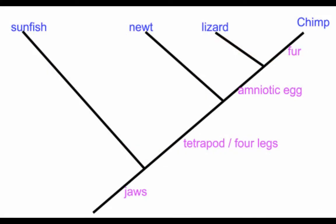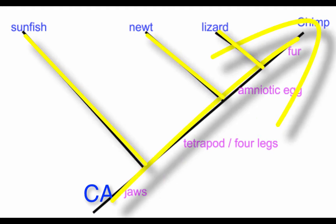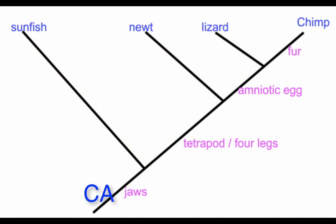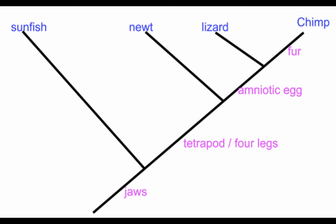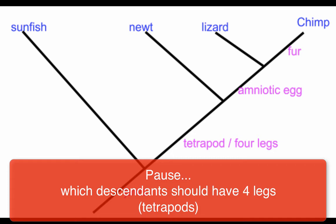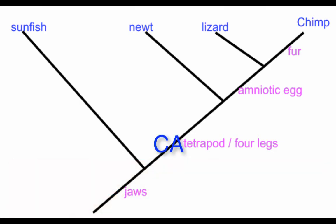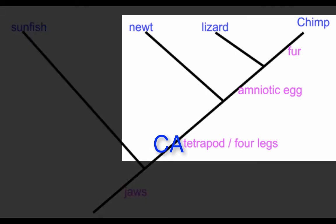The first cladogram you saw actually had traits listed on it, and you may see another version of the cladogram where traits are shown. To figure out what traits you would expect to see in an organism, it's similar to finding where the common ancestor between those organisms is. A common ancestor who had certain traits would pass those traits down to its descendants. For example, all organisms on this cladogram would be expected to have jaws — the common ancestor at the bottom had jaws and passed them to the sunfish, lizard, and chimp. Which organisms would you expect to have four legs, or be tetrapods? If the common ancestor here had tetrapods, it would have passed four legs down to the newt, lizard, and chimp.